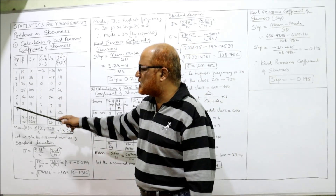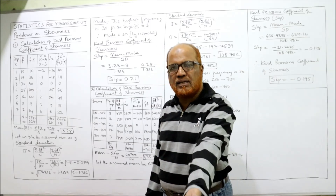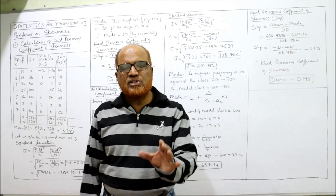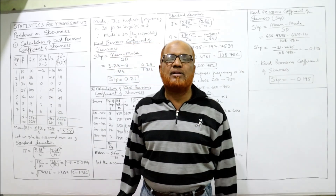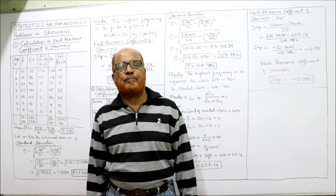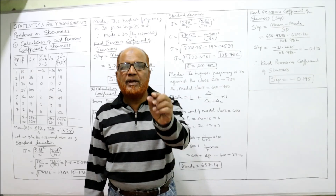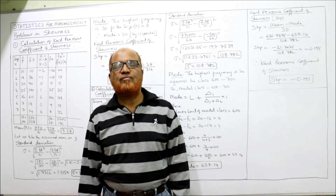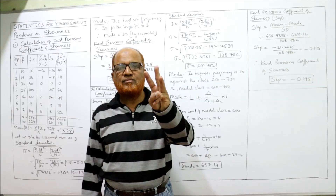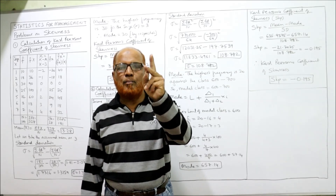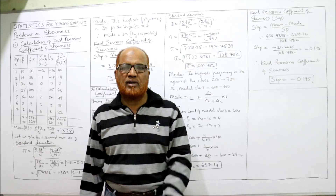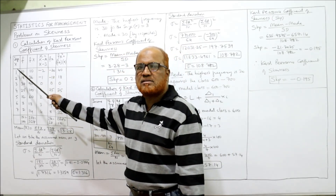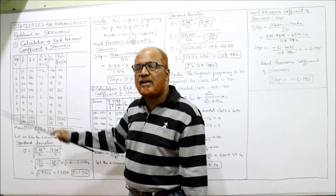For the calculation of Carl Pearson's coefficient of skewness, the first column is the size: 1, 2, 3, 4, 5, 6, 7. The second column is the frequency: 10, 18, 30, 25, 12, 3, 2. Remember the formula: SKP = (Mean − Mode) / Standard Deviation. So we require three things: mean, mode, and standard deviation.